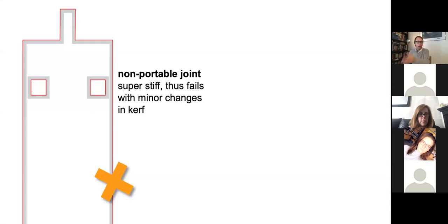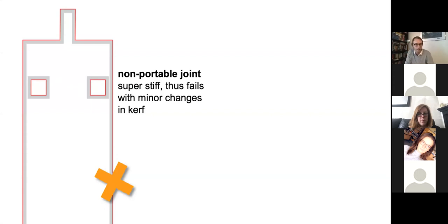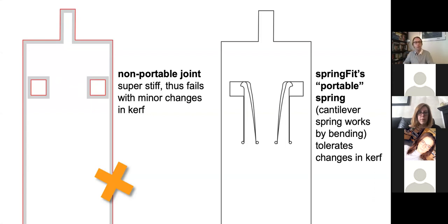Here is a close-up of one of the elements of the microscope — this cutout is where the other part needs to fit inside. This is a very non-portable joint: you compress the material and stick the parts together, but the material is very intolerant to that modification. Any small change in the amount of material removed will make the joints fail. What we do in SpringFit is take those joints and convert them to portable springs. We use a cantilever spring as the solution — the great thing is it allows the material to bend instead of compress, to which the material is much more tolerant.